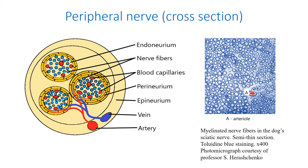The perineurium serves as a diffusion barrier between the endoneurium and the extrafascicular tissues. It maintains the homeostasis of the endoneurium and defends the sheathed nerve fibers from toxins and infectious agents. The epineurium consists of dense irregular connective tissue, surrounds the whole peripheral nerve and fills the spaces between fascicles. Epineurium is rich in thick collagen fibers and contributes to the tensile strength of the nerve. Large nerve trunks are usually surrounded by adipose connective tissue, which is called paraneurium.